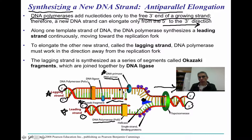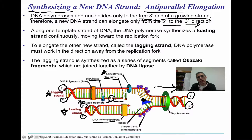Another problem with Okazaki fragments is that there are gaps between them—empty spaces where the fragments were added. We have a special enzyme called DNA ligase, indicated by the blue bubble in the diagram, that comes through and fills in those gaps so we can have one continuous piece of DNA. These enzymes, which we discussed in the previous screencast, are very important.